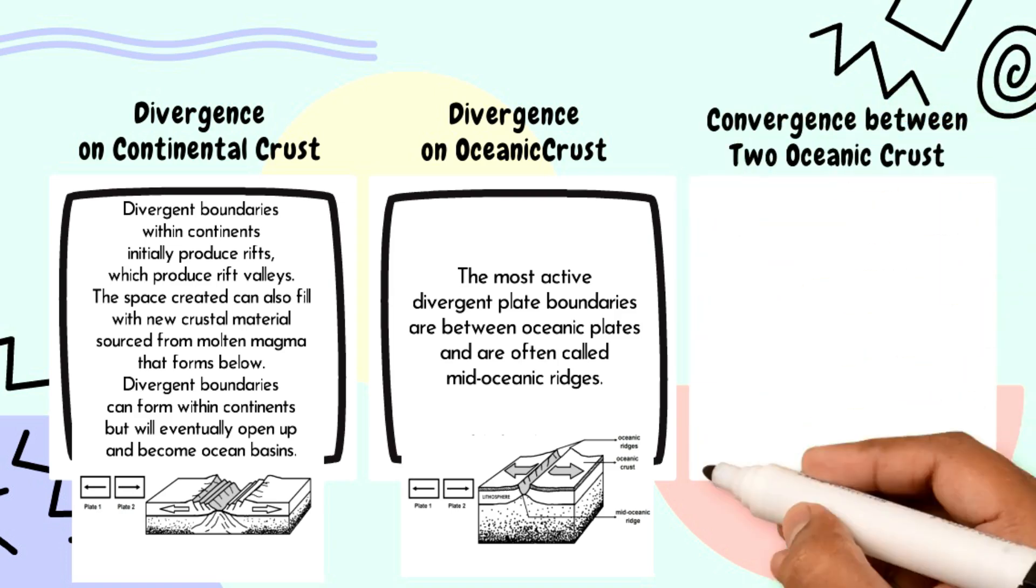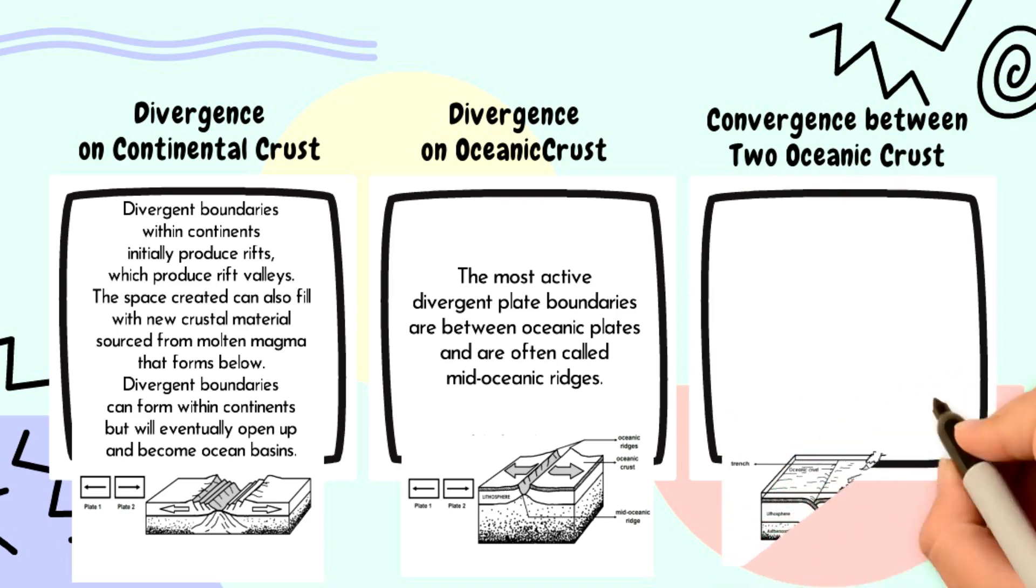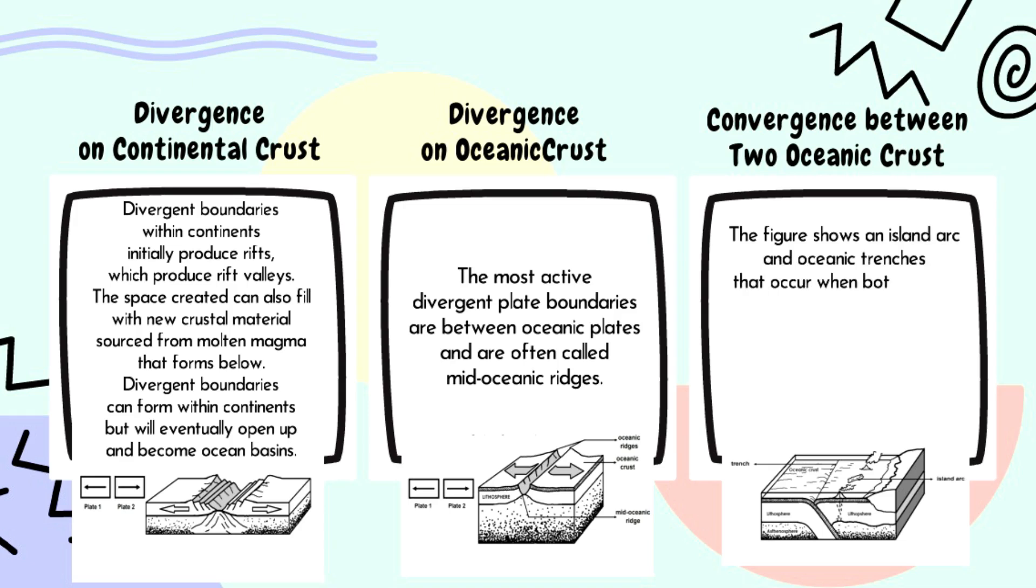Convergence between two oceanic crusts. The figure shows an island arc and oceanic trenches that occur when both of the plates are made of oceanic crust. Zones of active seafloor spreading can also occur behind the island arc. These are often associated with submarine volcanoes.